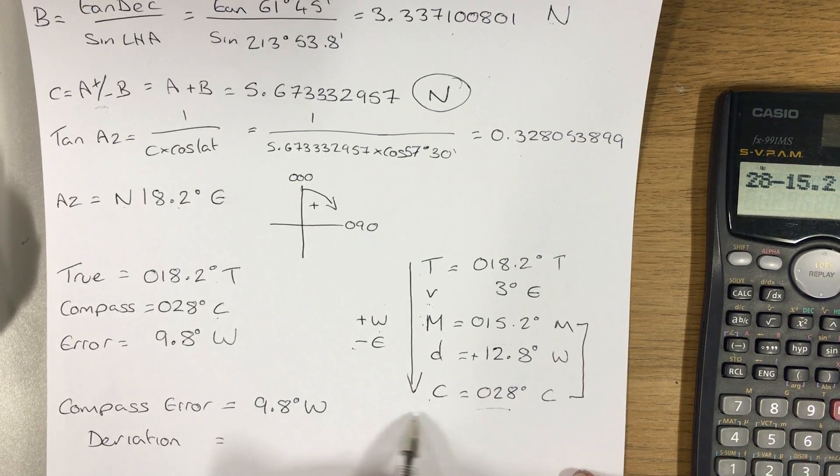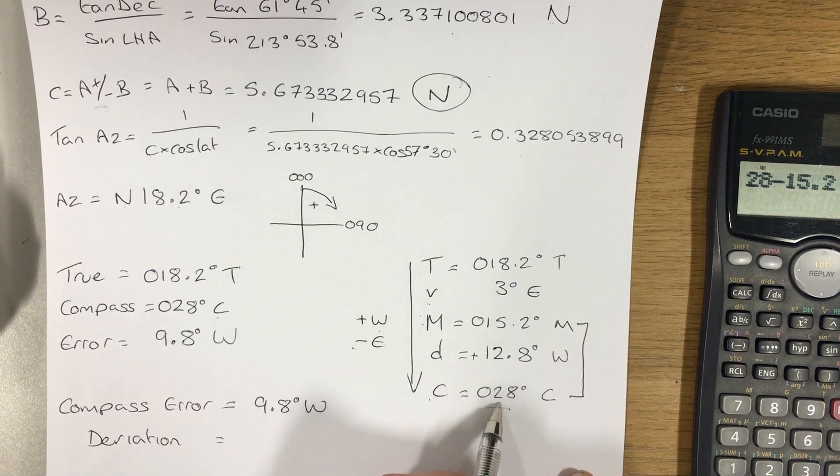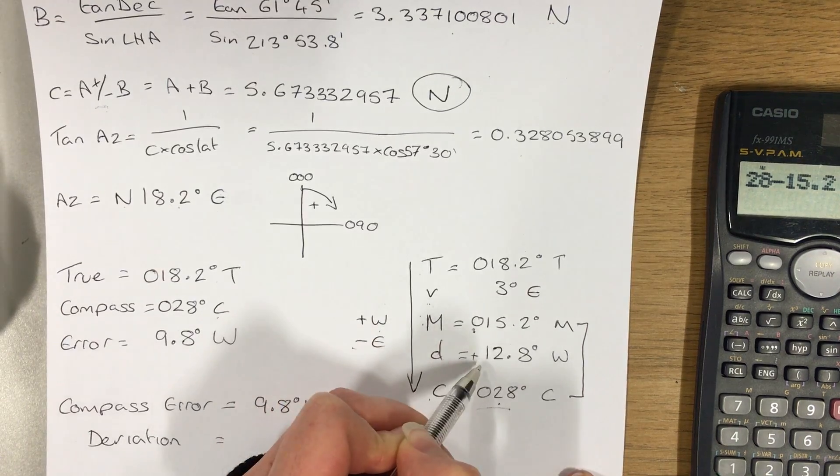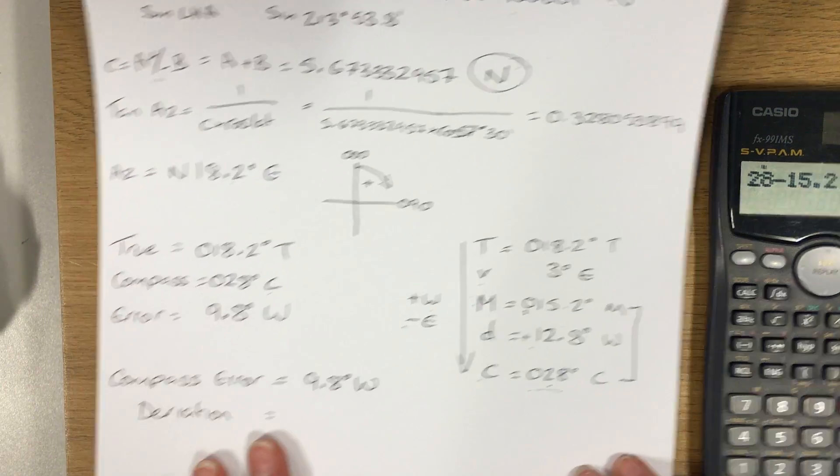So therefore my declination has got to be west, because in order to get from 015.2 to 028, I have to add 12.8 degrees. And you can also think of it as that rule that I said before: compass best, error west. Compass is better than this one, it's bigger than this one, so the error has got to be west. My deviation is west.